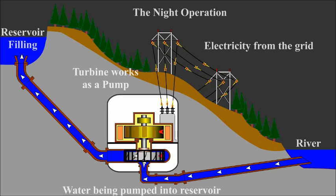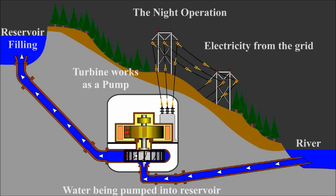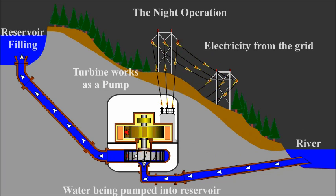This seems strange, because everyone knows that pumping the water to high elevation requires more energy than the energy generated by the same water flowing in reverse. The catch is the price difference in the cost of electricity. The price is much lower at night than in the daytime, because daytime electric consumption far exceeds night consumption.